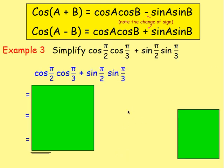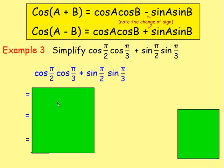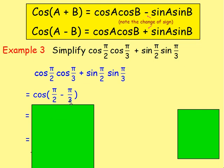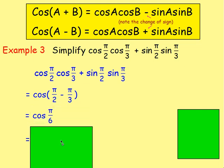Example number three: simplify cos(π/2) cos(π/3) plus sin(π/2) sin(π/3). Again, if you're wanting to simplify, you think cos something cos something plus sin something sin something. Because you've got a plus in the middle, when you put it back into your brackets you're going to have the minus. So A and B are π/2 and π/3, giving cos(π/2 minus π/3). Work out π/2 take away π/3 — you could think in degrees: 90 minus 60 is 30 degrees, or do the fraction work: 3π/6 minus 2π/6 gives π/6.